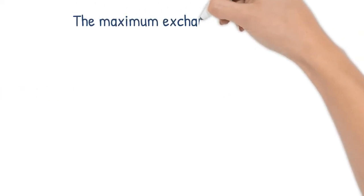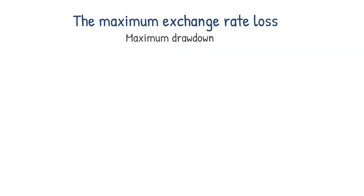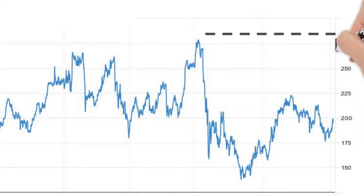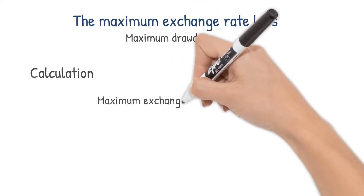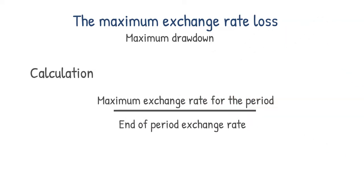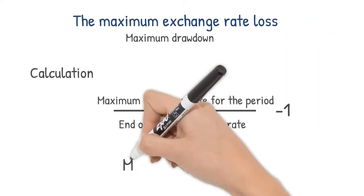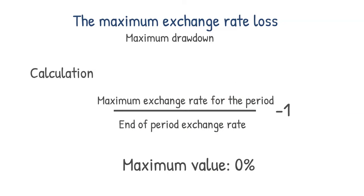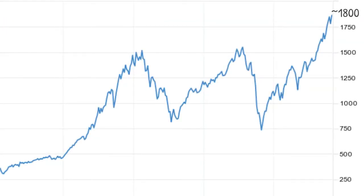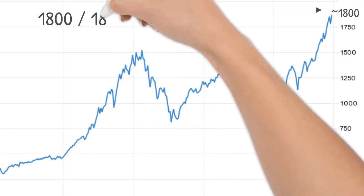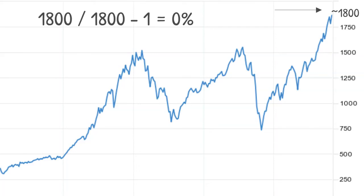Some metrics are specifically designed to measure risk. One of these is the maximum exchange rate loss. It shows you how much you would have lost if you had entered at the highest point in the period under consideration and then sold your investment at the end of the period. The calculation is as follows. You divide the maximum price of the period by the price at the end of the period, then subtract 1 to see the change as a percentage. The maximum value of this indicator can be 0%. After all, we are calculating a maximum exchange rate loss. If we look at a case where the exchange rate is continuously rising and you sell your investment at the very end of the period, it is right at the maximum. You can also see from the formula that if the highest rate is also the last rate, then the fraction will be 1, subtracting 1 from that gives you 0%.